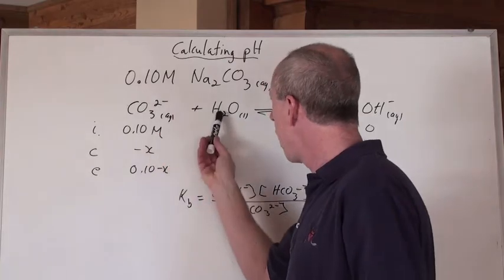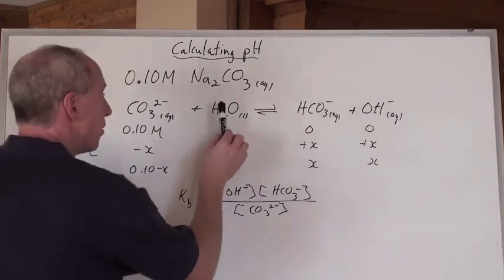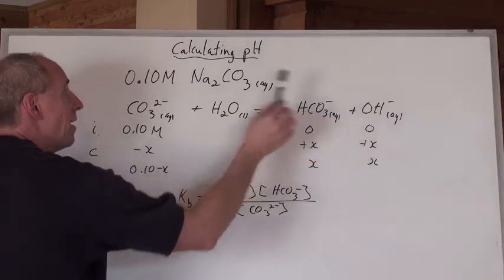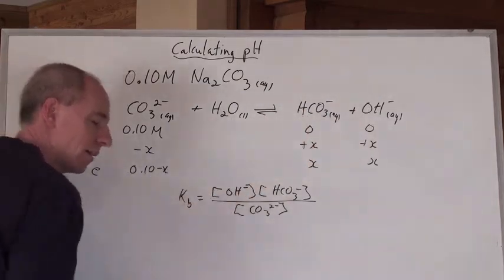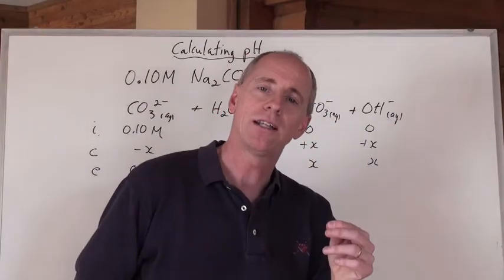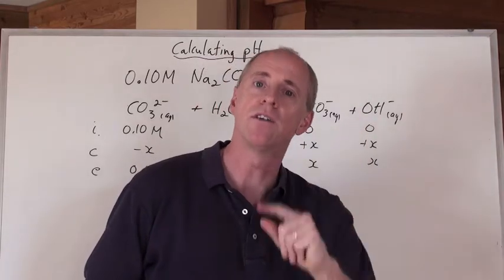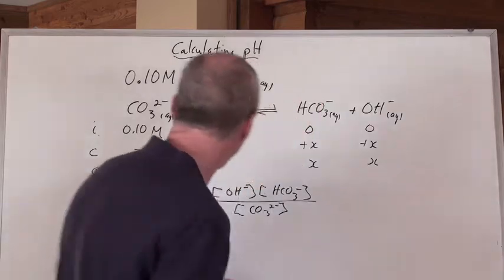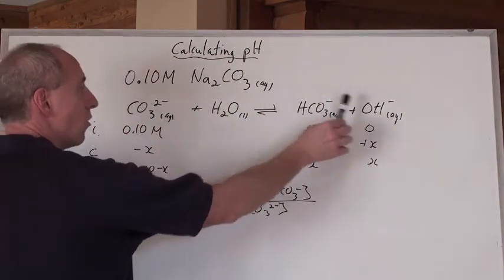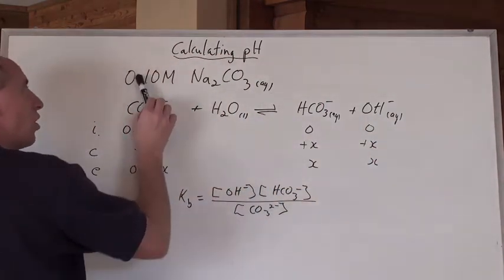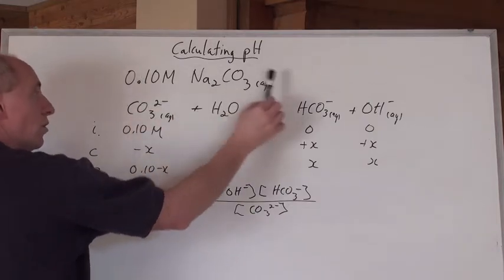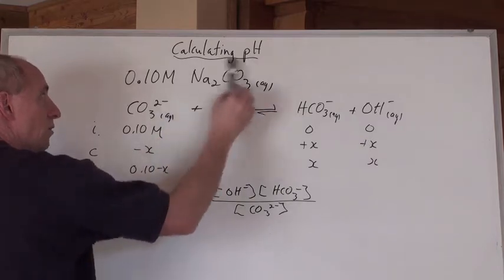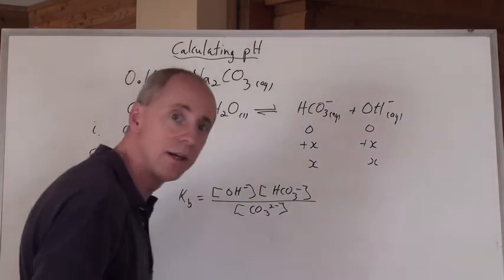Carbonate, when it hits water, is going to do this. Takes a proton from water and turns into this bicarbonate, and the water turns into hydroxide. If you could calculate the concentration of the hydroxide in solution, you could find a pH. How are you going to do that? Well, first of all, you've added this to water and got the equation. Recognizing that the concentration of carbonate, when you dissociate this chemical, is going to be that concentration there, 0.1. One of these molecules makes one of these carbonates.